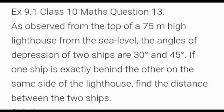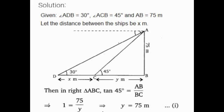The height of the lighthouse is 75 meters from the sea level. The angles of depression of the two ships are 30 degrees and 45 degrees, and one ship is exactly behind the other on the same side of the lighthouse. In this question we consider two triangles: triangle ABC and triangle ADC, in which AB equals 75 meters (the height of the lighthouse), angle ACB equals 45 degrees, angle ADC equals 30 degrees. BD equals x plus y meters, BC equals y meters, and CD equals x meters.